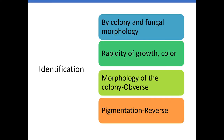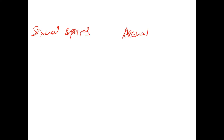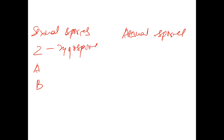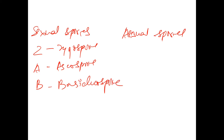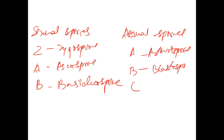Sexual spores can be remembered as ZAB: Zygospore, Ascospore, Basidiospore. Asexual spores can be remembered as ABC: A for Arthrospore, B for Blastospore, C for Chlamydospore.